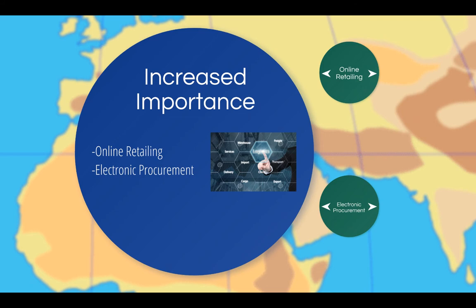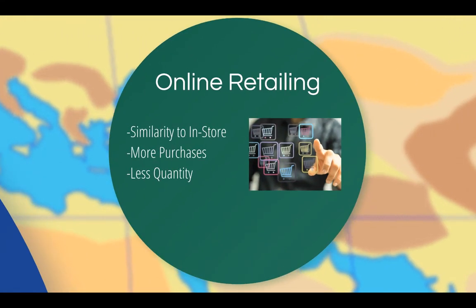The importance of the Internet on logistics cannot be overstated. At the beginning of the 21st century, roughly 5% of the world's population used the Internet. Today, that number is over 35% and continues to rise. The impact of the Internet on logistics includes online retailing and electronic procurement. There are logistical similarities between both online and in-store retailing; many functions such as transportation, warehousing, material handling, and order management occur in both, and both may use the same equipment such as barcoding and warehouse management systems.